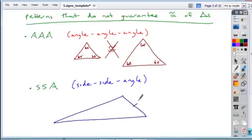But if we had a side, a side, and a non-included angle, so that's what the SSA pattern represents,